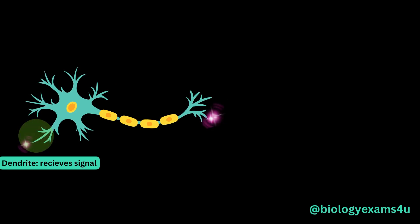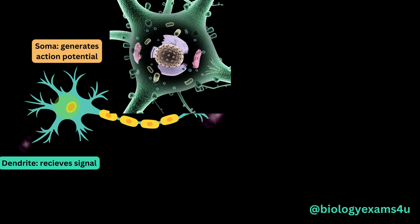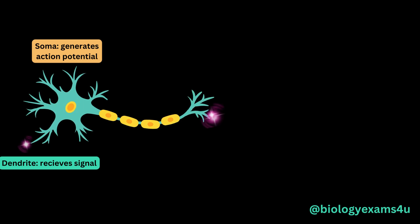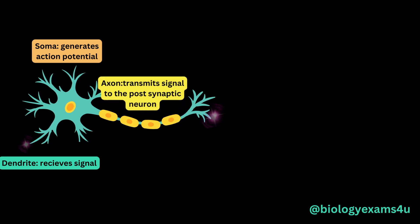The cell body or soma has genetic material DNA and other organelles, and possesses chemical machinery to produce the neurotransmitters that the neuron uses to communicate. An axon carries information as an electrical impulse, similar to a cable that carries electricity.